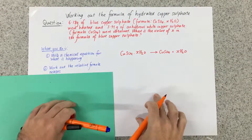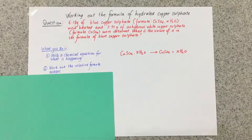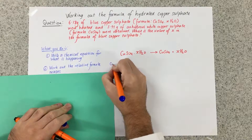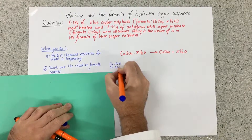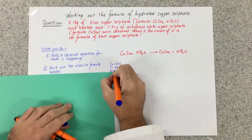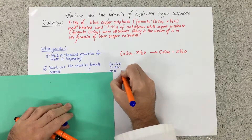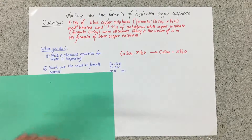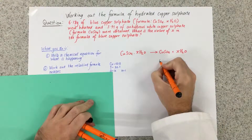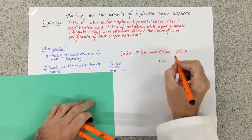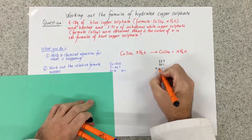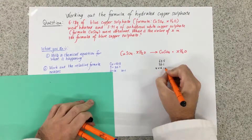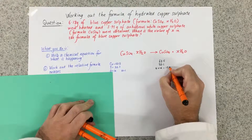Next part: work out the relative formula masses. From our periodic table we know that copper is 63.5, sulphur is 32.1, and hydrogen equals 1. So to work out the relative formula mass of copper sulphate, we add copper, which is 63.5, plus sulphur, which is 32.1, and four oxygens, which is four times 16 because it's O₄. If we add that up, the answer is 159.6.